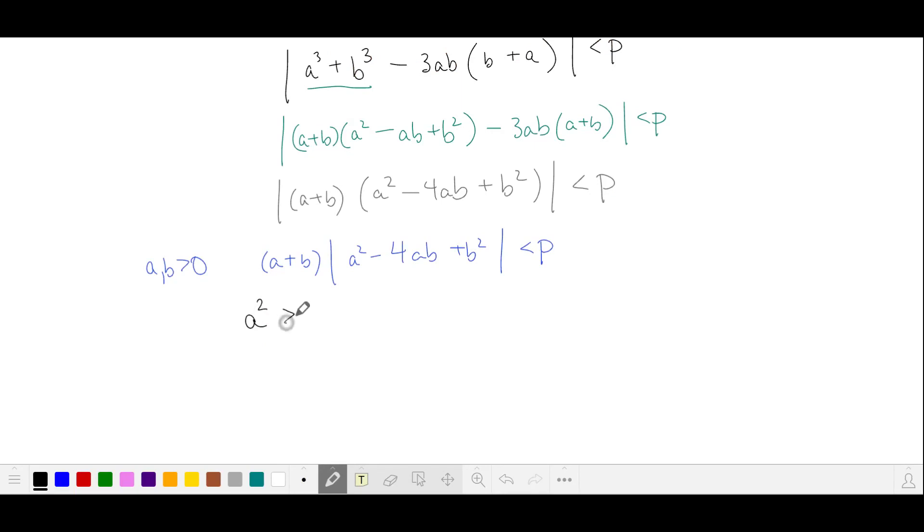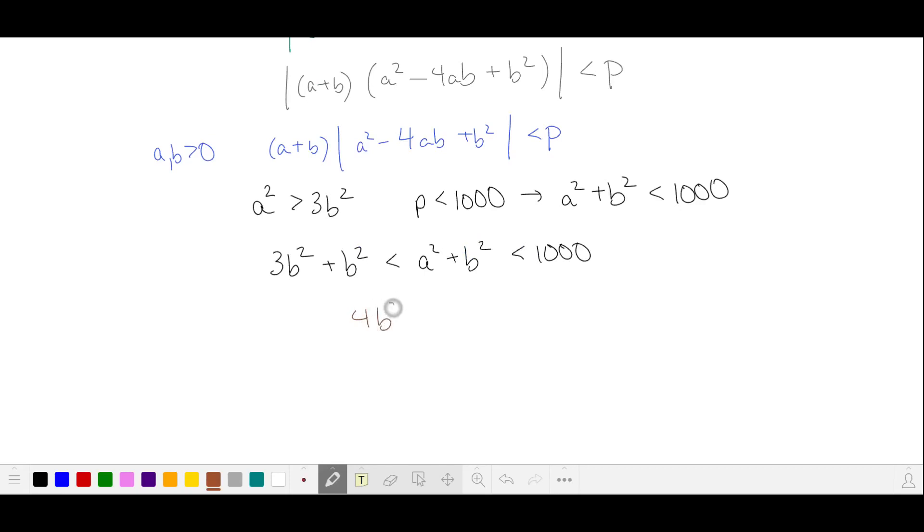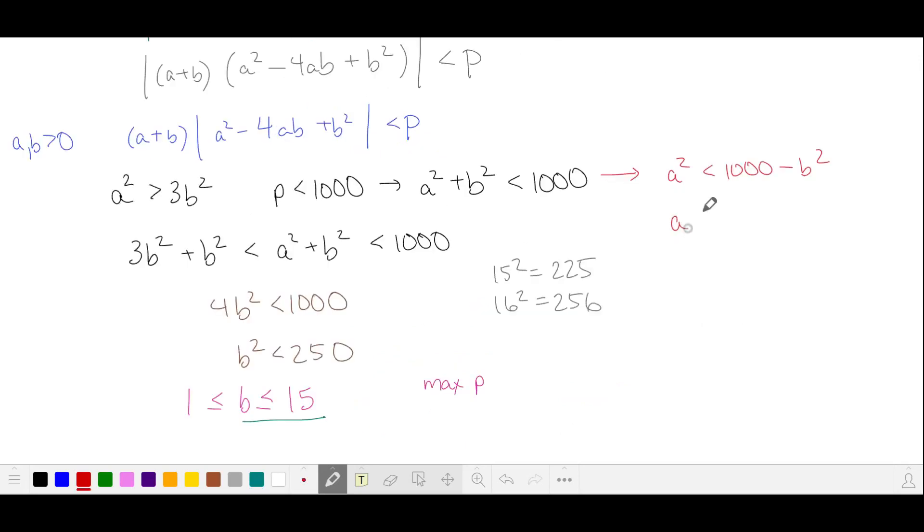Returning to our earlier restriction on a, we have a squared is greater than 3b squared, and we're looking for primes that are less than 1,000. So a squared plus b squared is also less than 1,000. Substituting for a squared, we get that 4b squared is less than 1,000. Dividing and comparing b to some perfect squares in the neighborhood, we have b as an integer between 1 and 15 inclusive. We're trying to maximize p, so we'll start with large values of b and work our way down. We also have that a is less than the square root of 1,000 minus b squared, and from this we have that a is greater than b root 3. So we have this chain inequality that bounds a.